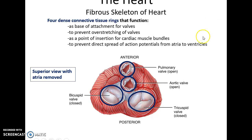There is what's called the fibrous skeleton of the heart: four dense connective tissue rings that surround the four valves of the heart. Looking at a superior view of the heart with the atria removed, these rings act as attachment points for the valves themselves, help prevent the valves from over-stretching, serve as insertion points for the cardiac muscle tissue, and prevent the spread of action potentials through the cardiac muscle tissue from the atria to the ventricles.